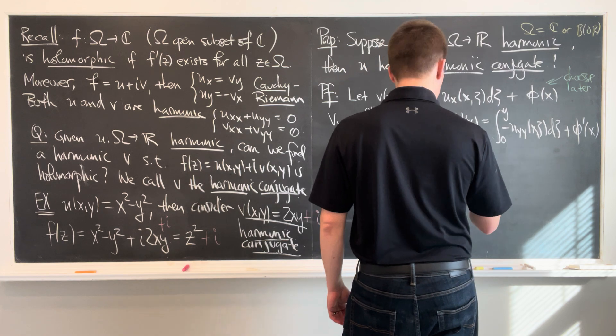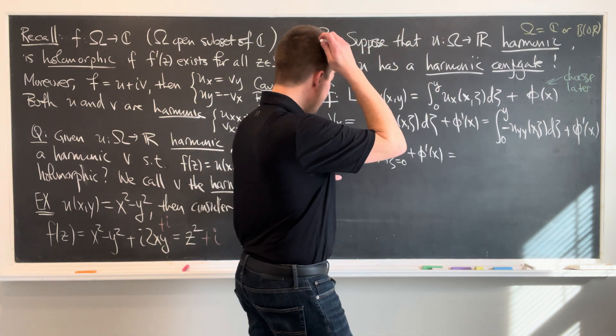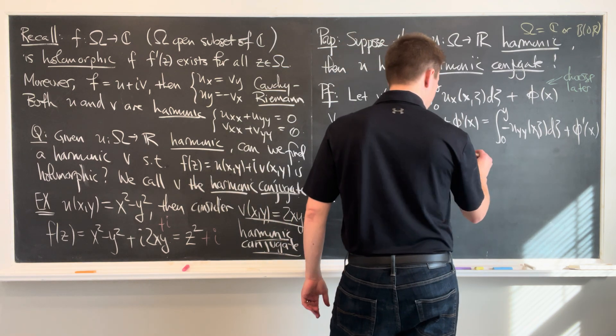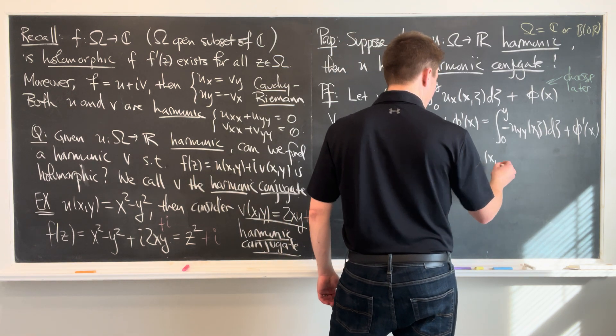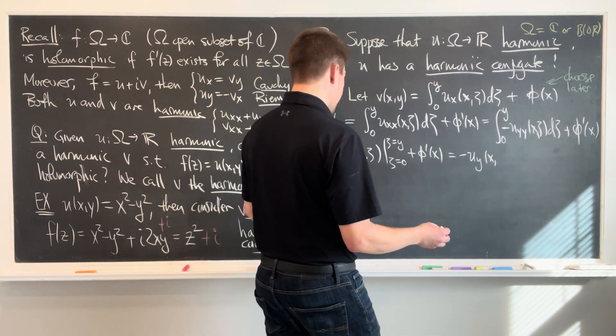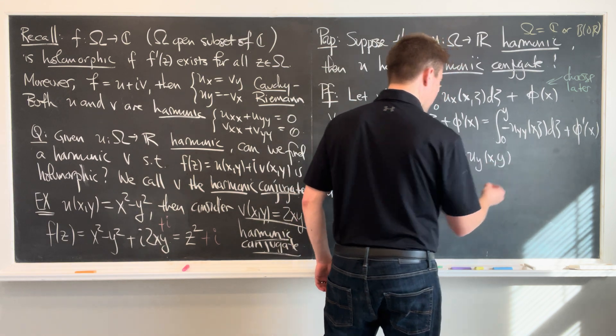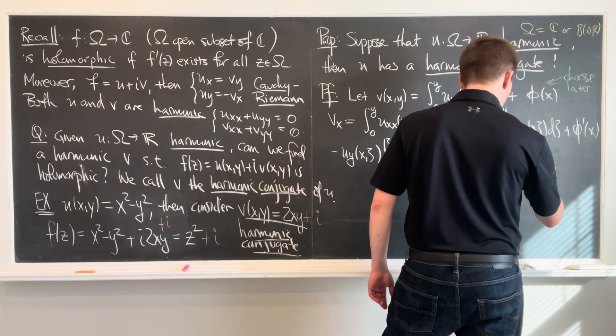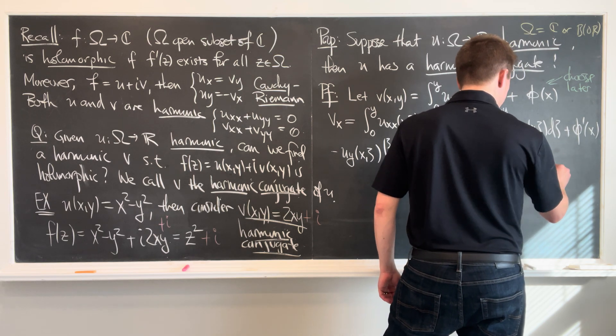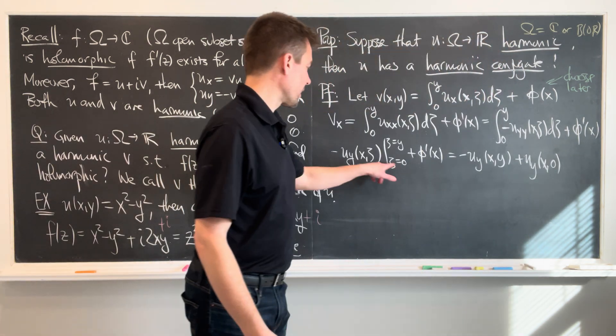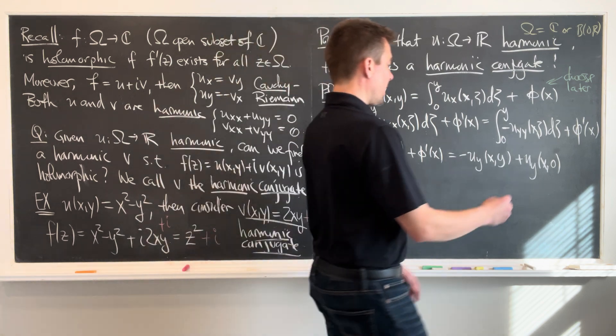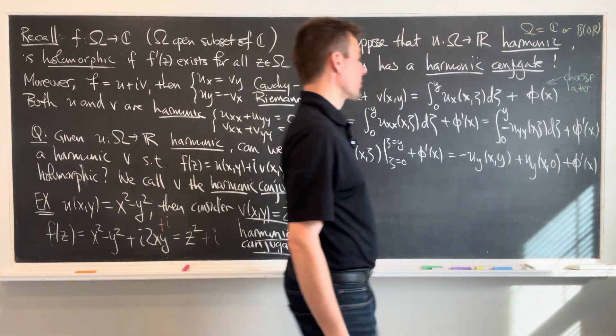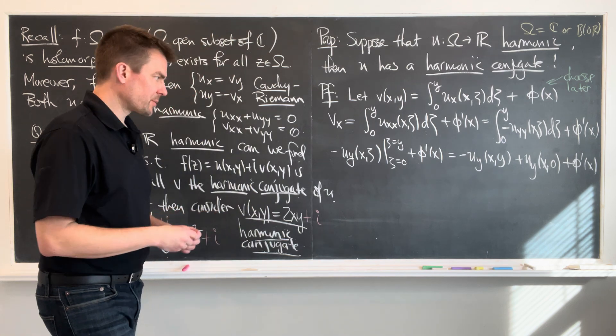And now this becomes a negative uy, so this is negative uyx, x and then y. Beautiful. That's what we want. And then a plus uyx zero by plugging in zeta equals zero plus phi prime of x. Excellent. So that's what that expression is equal to.